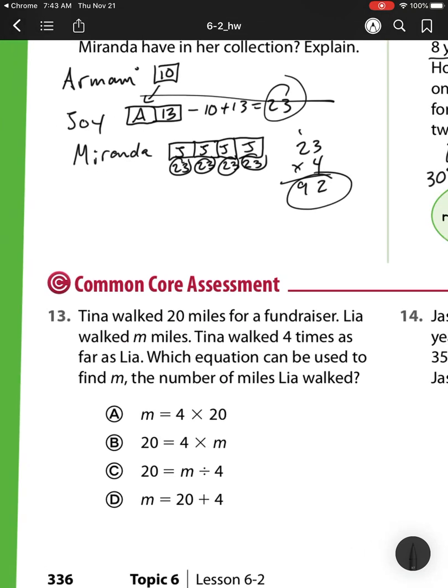For number 13, Tina walked 20 miles for a fundraiser. Lisa walked m miles. Tina walked 4 times as far as Lisa. So we have Tina and we have Lisa. I'm sorry, not Lisa, Leah. Leah walked m miles. Tina walked 4 times as far. So Tina is going to have 4 groups because she walked further than Leah. And all together, we know that she walked 20 from our problem.